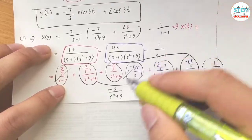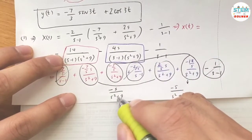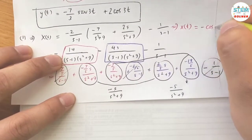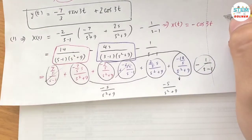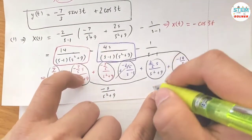Applying the inverse Laplace, x(t) equals negative cos(3t) for the cosine term.